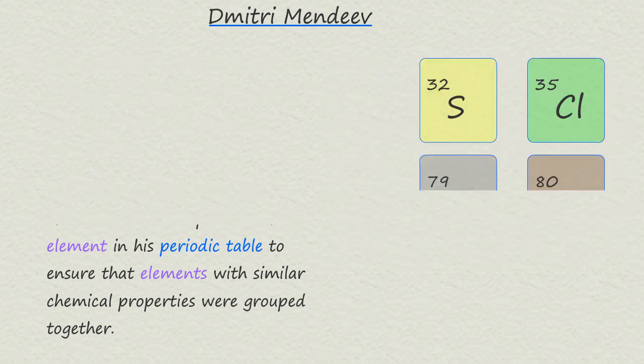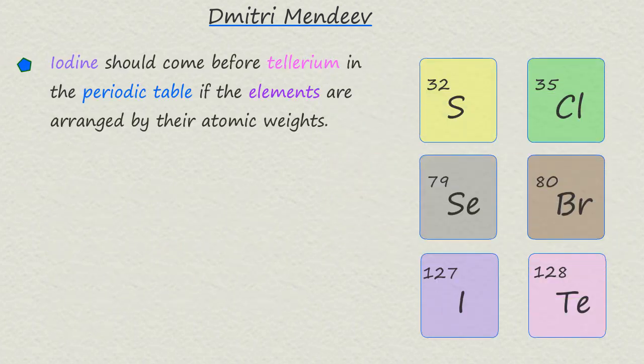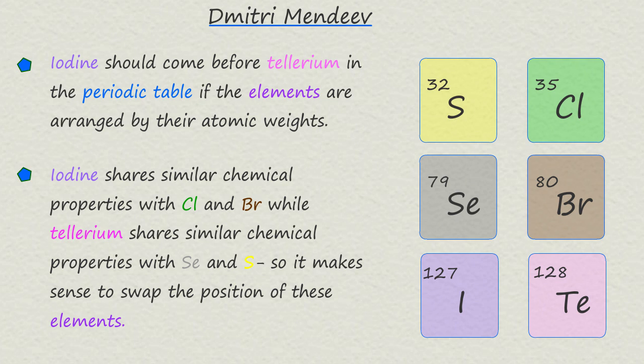For example, based on their atomic weights, iodine should have been placed before the element tellurium. However, Mendeleev observed that iodine shared similar chemical properties with fluorine, chlorine and bromine, while tellurium resembled sulfur and selenium. He therefore swapped their positions in the periodic table so that elements with similar chemical properties were placed underneath each other.